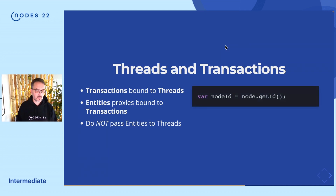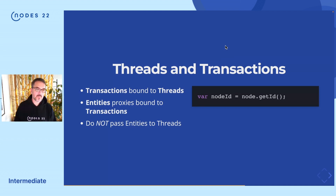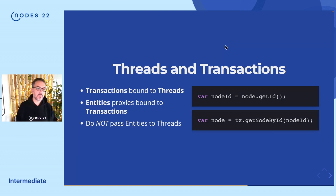What you do instead is pass the internal node ID. From the old thread, you call node.getId() and get back a long, which is the pointer to the address in the store file. You pass this node ID over to your new thread, and in the new thread, before you actually try to access the node, you use the new transaction and call getNodeById(), providing the node ID. It's just something to be careful about, because otherwise you get really funny exceptions.